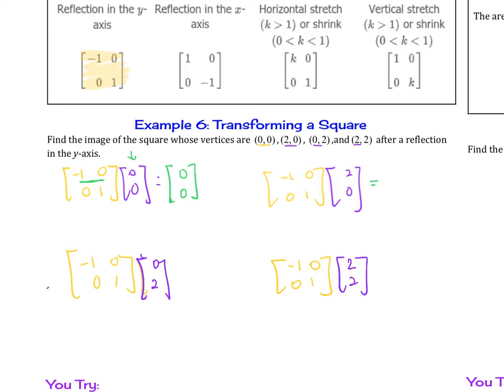So here when we're multiplying, remember this is -1 times 2 plus 0 times 0. And then below, that's 0 times 2, which is 0, and 1 times 0 is 0. So therefore, this will be (-2, 0). Then we do the next one. -1 times 0 is 0, 0 times 2 is 0. And then 0 times 0 is 0. 1 times 2 is 2. So that is (0, 2).